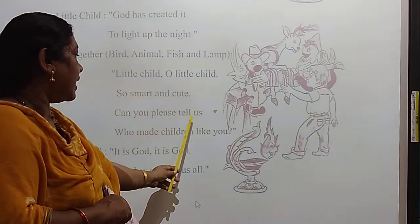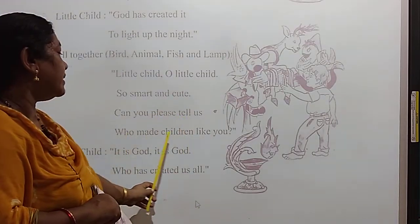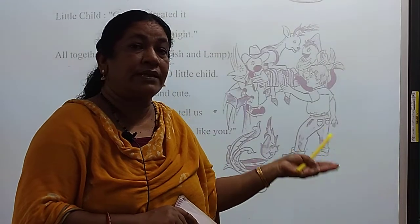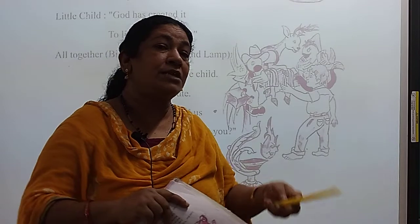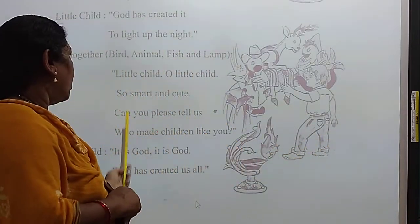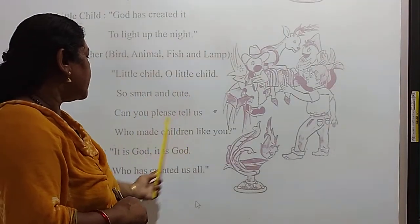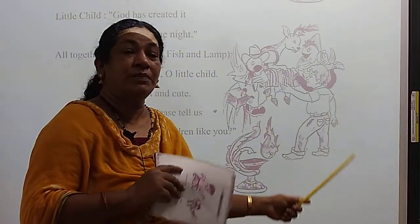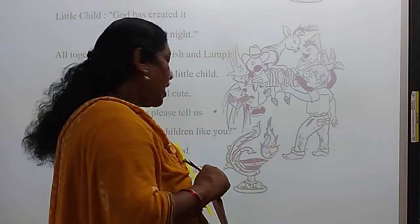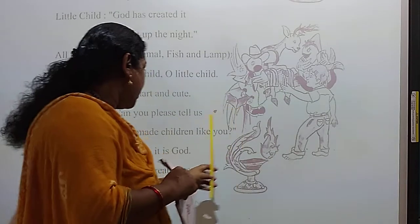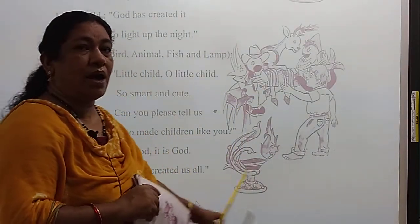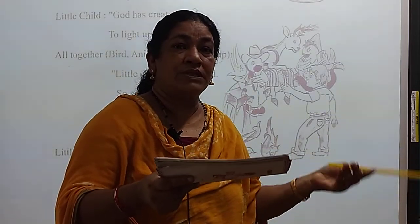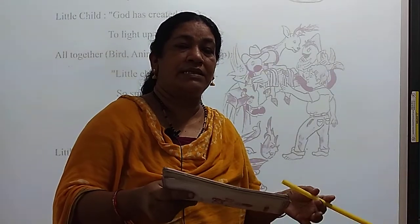So smart and cute. Can you please tell us, P-L-E-A-S-E, who made children like you, C-H-I-L-D-R-E-N? God has created us. God made the forest, sea, sky, moon, sun, stars — everything. My parents, neighbors, brothers and sisters — all are God's gifts. God has created everything.